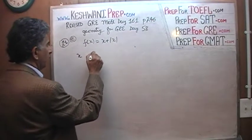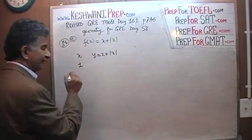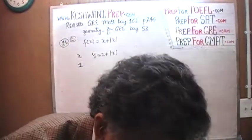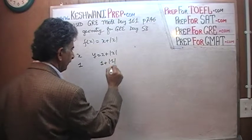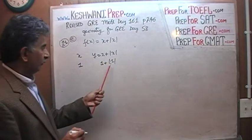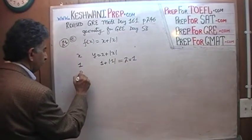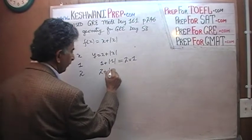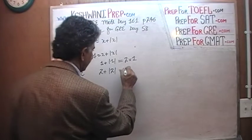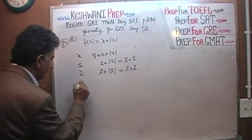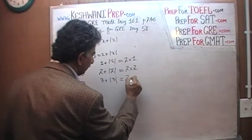Here is our x and here is our y, which is x plus the absolute value of x. For example, when x is 1, y is going to be 1 plus the absolute value of 1. Absolute value of 1 is 1, so 1 plus 1 is 2 — or 2 times 1. When x is 2, we get 2 plus the absolute value of 2. Absolute value of 2 is 2, so 2 plus 2 is 4, which is 2 times 2. When x is 3, we get 3 plus the absolute value of 3, which is simply 2 times 3.